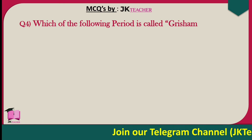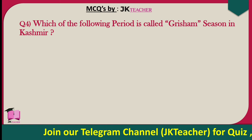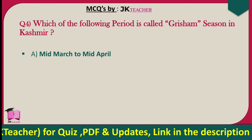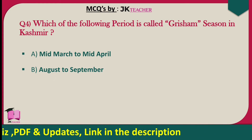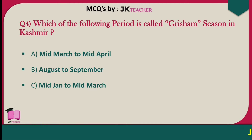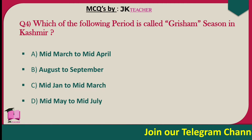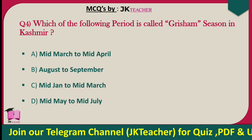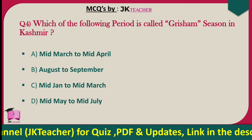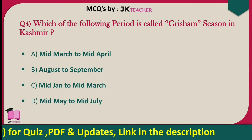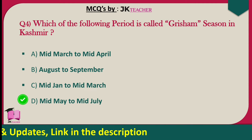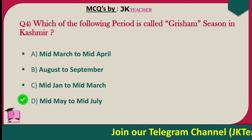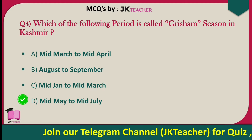Which of the following periods is called Grisham season in Kashmir? Options are mid-March to mid-April, August to September, mid-January to mid-March, and mid-May to mid-July. The right answer is option D — mid-May to mid-July is called Grisham season in Kashmir.